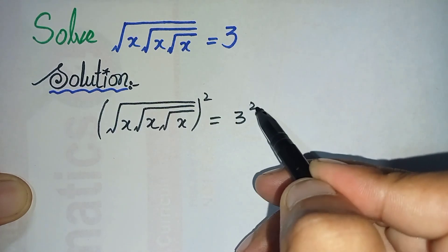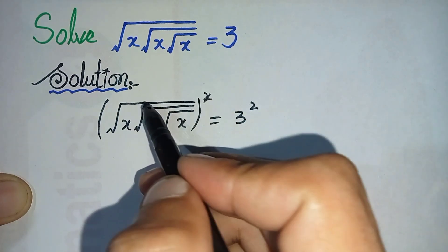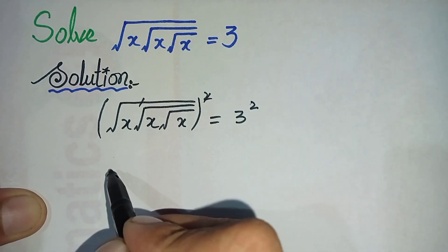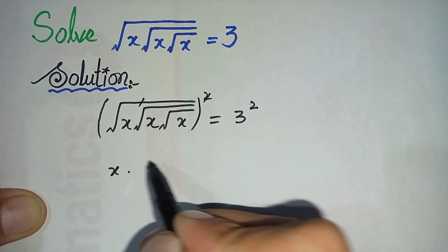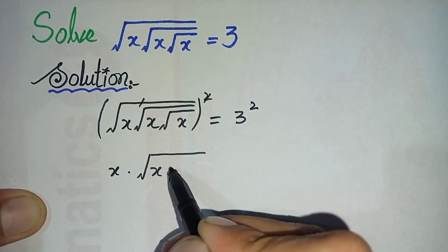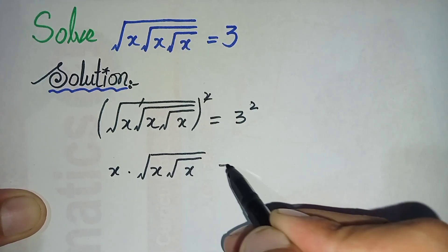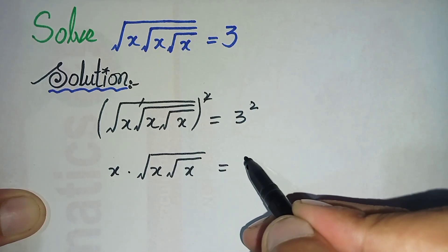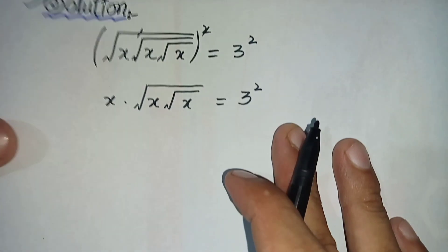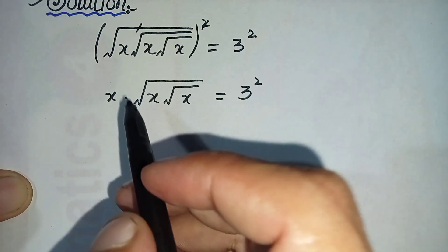Taking the square on both sides: on the left-hand side, the square root and the square cancel each other, leaving x times square root of x times square root of x. On the right-hand side, 3 squared gives 3 raised to power 2.